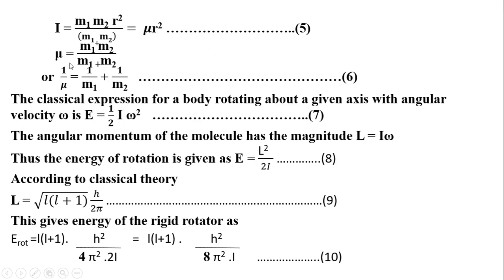The reduced mass μ is defined as μ = M1·M2 / (M1 + M2), or equivalently 1/μ = 1/M1 + 1/M2, equation number 6.